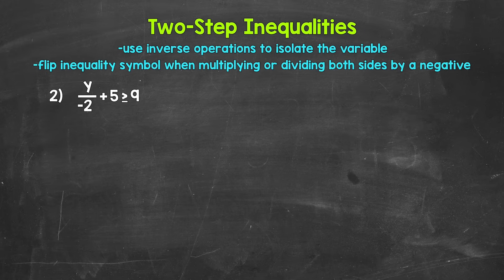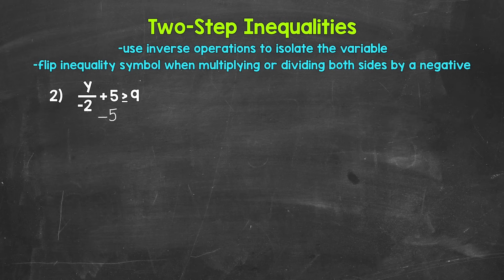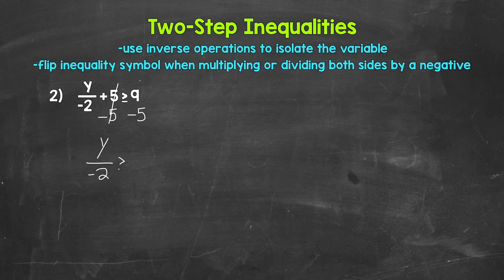Let's move on to number 2. We have y divided by negative 2, plus 5, is greater than or equal to 9. Just like in number 1, we go in the reverse order of operations to isolate the variable — undo the addition first, then the division. The inverse operation of addition is subtraction, so subtract 5 from the left side. Whatever we do to one side, we must do to the other, so subtract 5 from the right side as well. These 5s cancel each other out, and on the right, 9 minus 5 gives us 4.